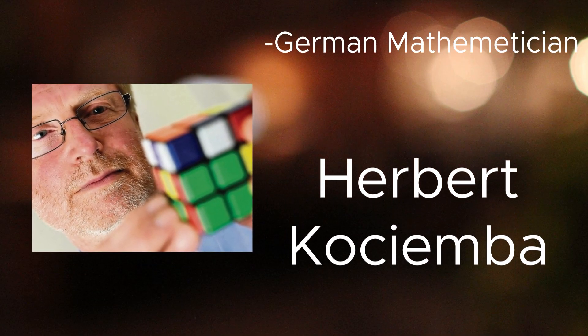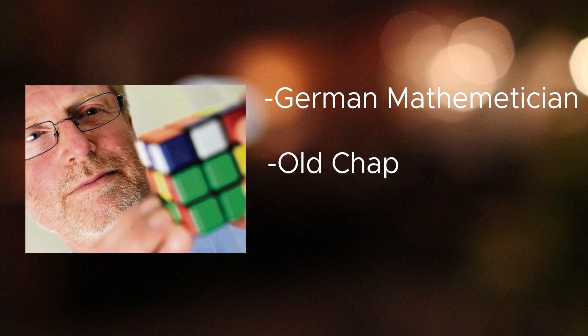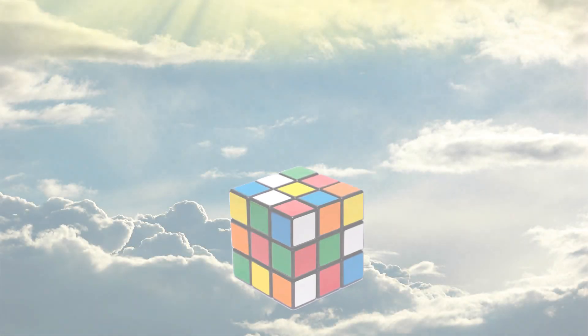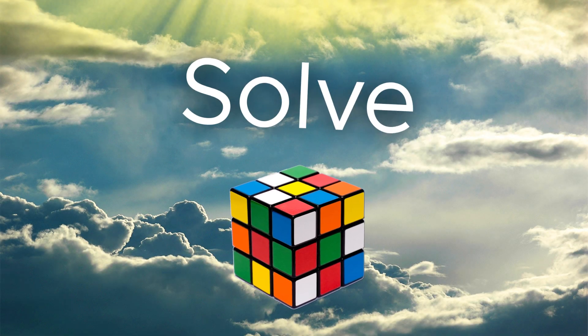This is Herbert Kociemba. He's a German mathematician, an old chap, and found God's number. No, not that number. This number. The maximum number of moves it takes to solve a Rubik's Cube.